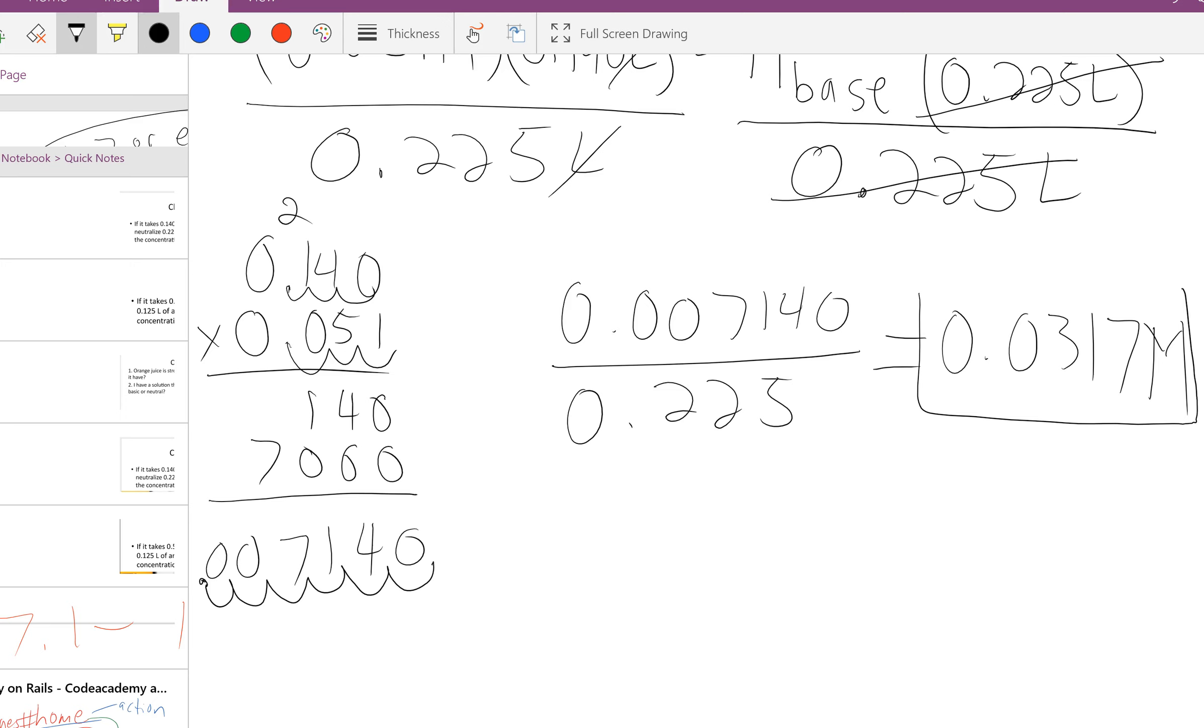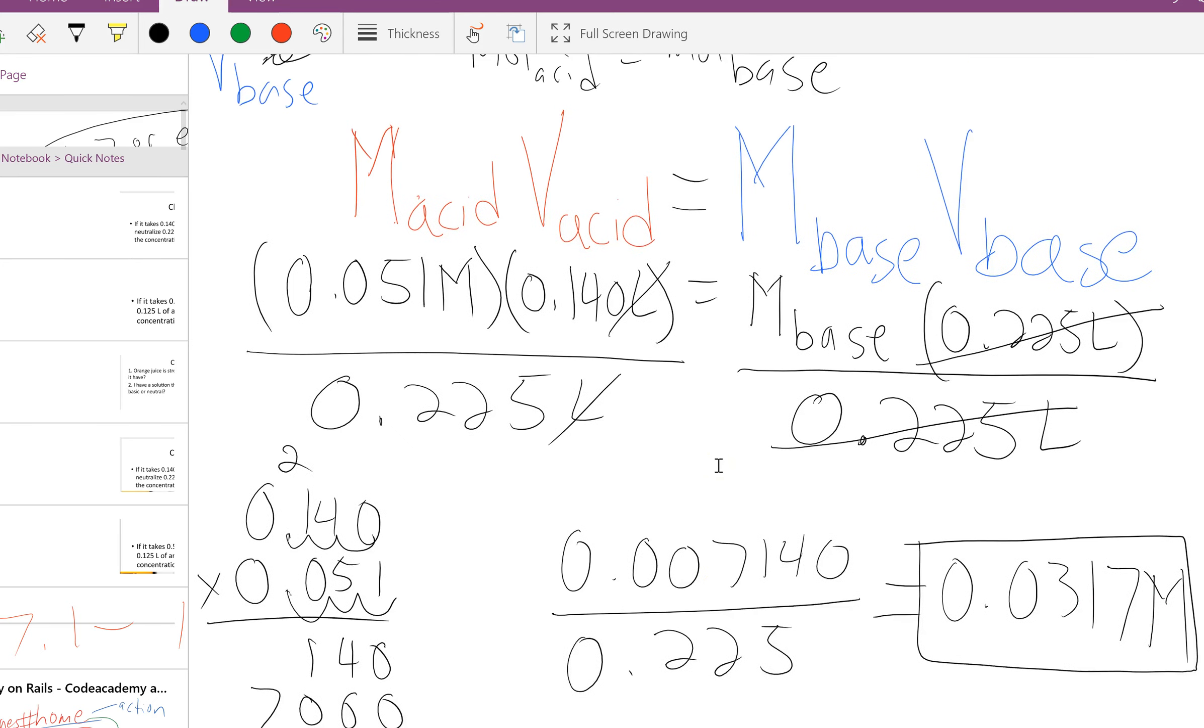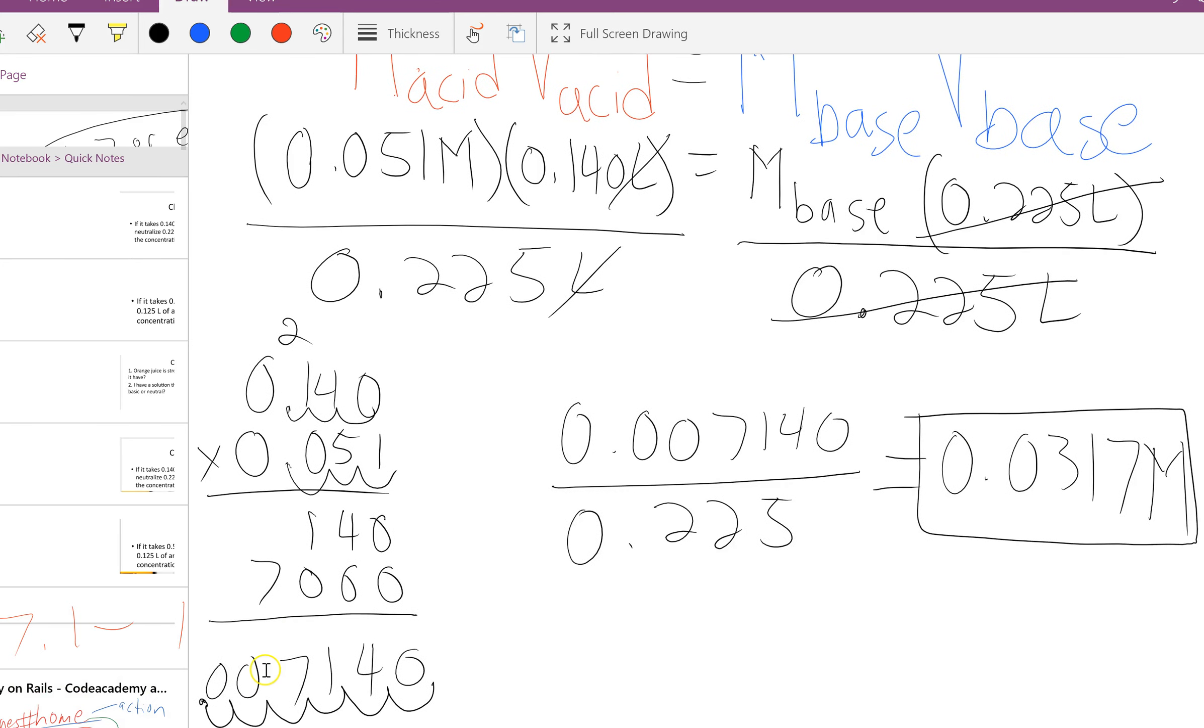Did anyone else get that? That is the strength of your unknown base. So if you do a titration, you can find out how strong an unknown base is just by doing a simple calculation. Any questions?